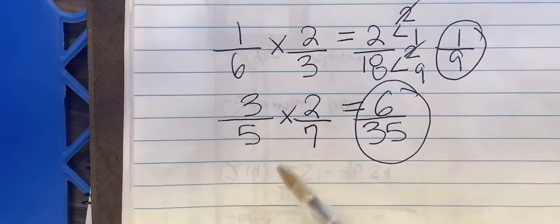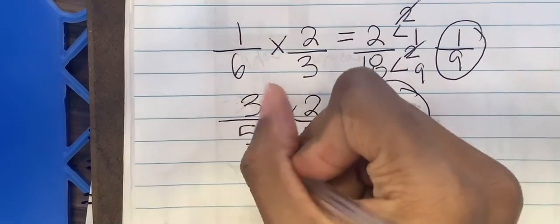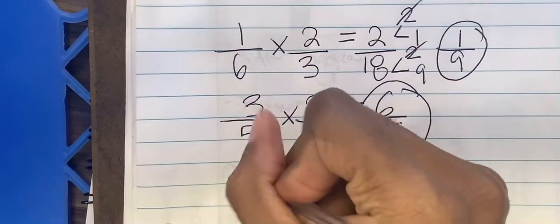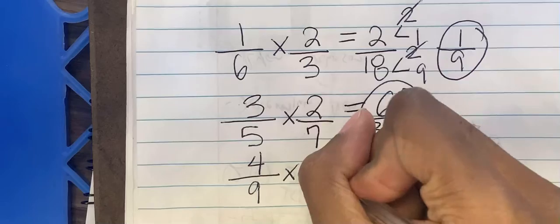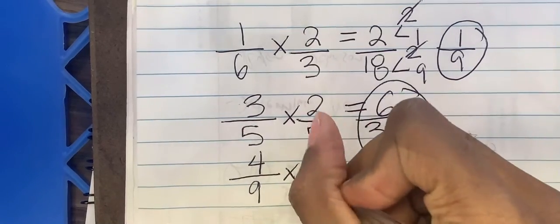Let's do this right here in this space. Let's do 4 divided by 9 multiplied by 2 divided by 7.